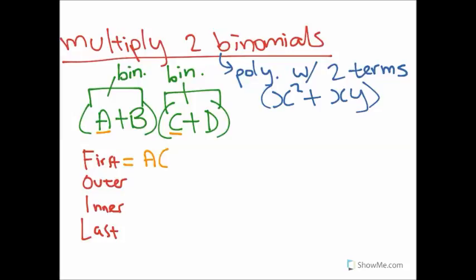Outer refers to the outer terms of the binomials. So, this is a and d. Inner then refers to b and c. And last refers to b and d.